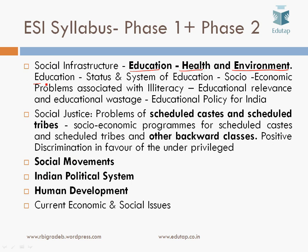As far as education is concerned: status and system of education, socio-economic problems associated with illiteracy, educational relevance and educational wastage, and educational policy for India. The next topic is social justice — problems of scheduled castes and scheduled tribes, socio-economic programs for SC, ST, and OBCs, and positive discrimination in favor of the underprivileged. Then social movements, the Indian political system, human development, and finally current economic and social issues.